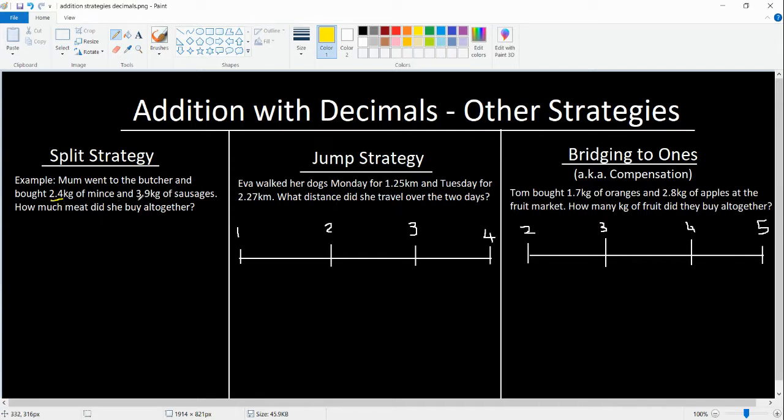We've got 2.4 and 3.9. Using the split strategy, we're going to split 2.4 and 3.9. We're splitting this into 2 and 0.4, and we're splitting this one into 3 and 0.9. We're going to add our 2 and 3 together, which gives us 5.